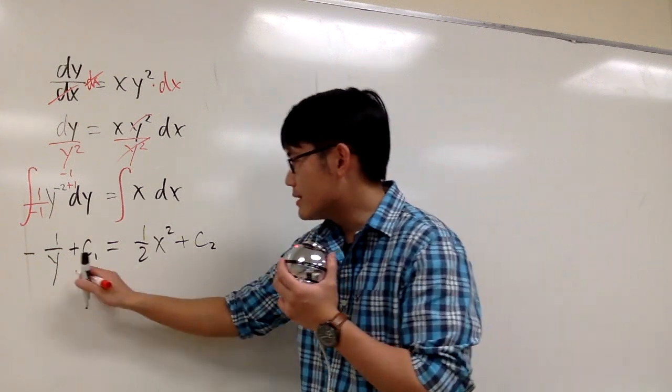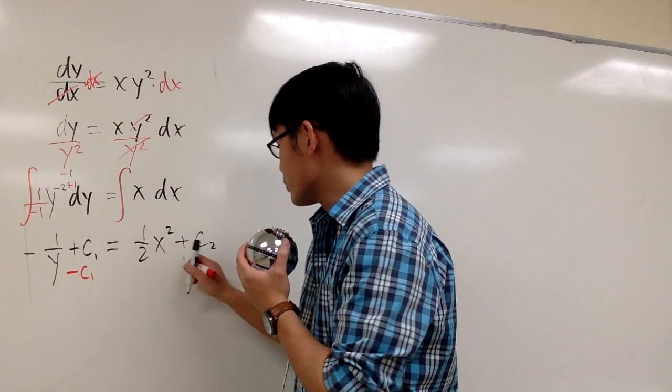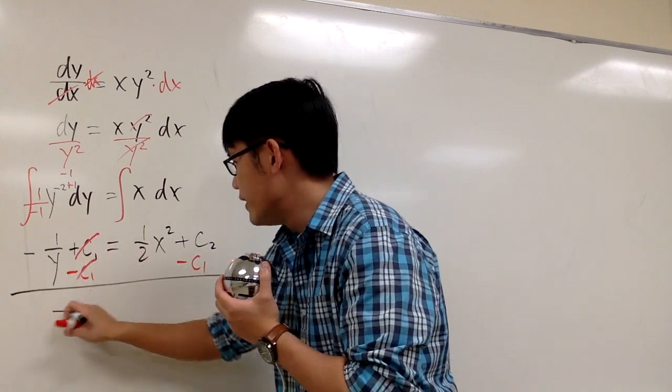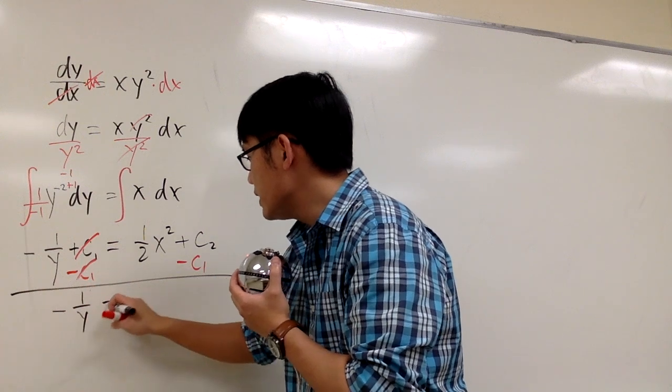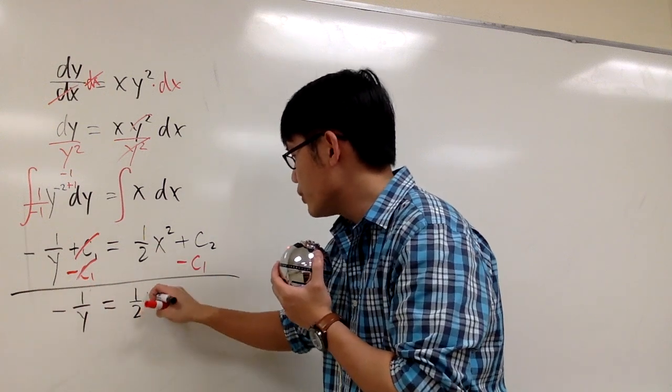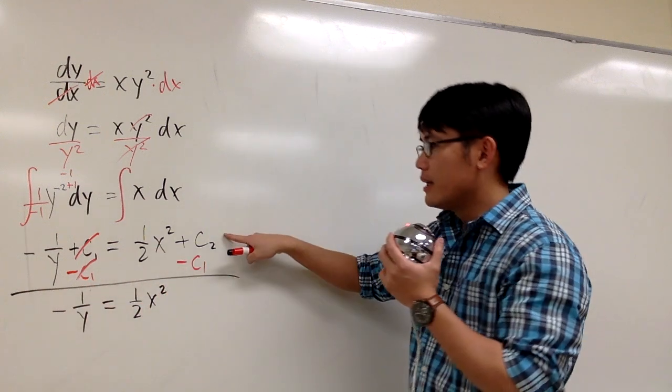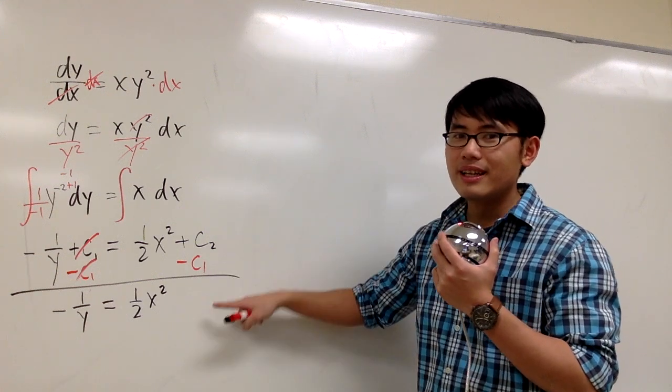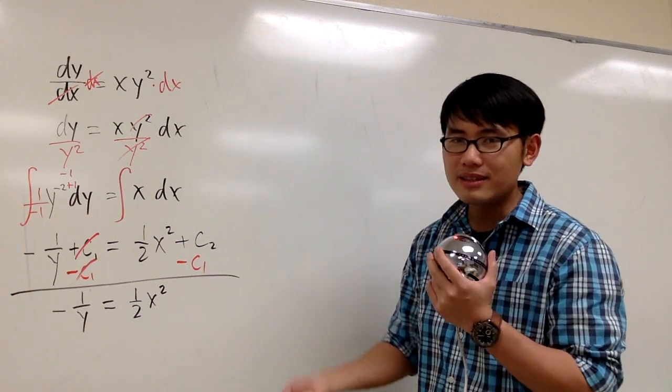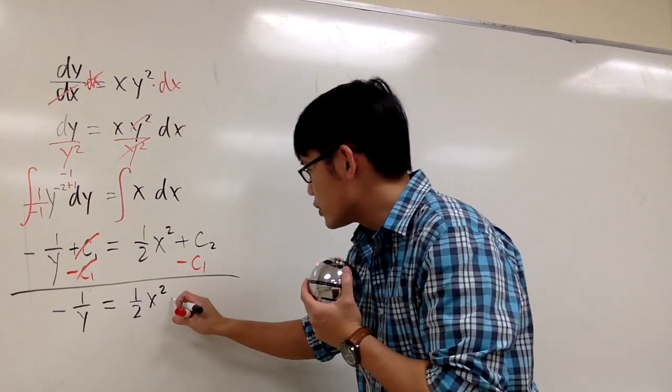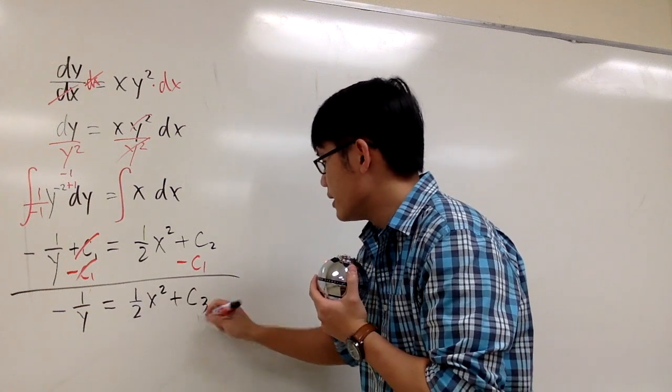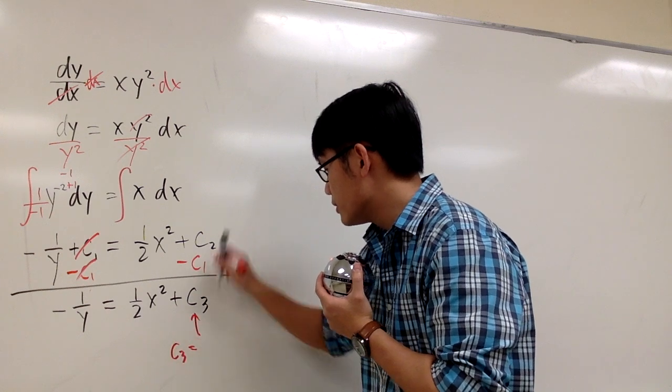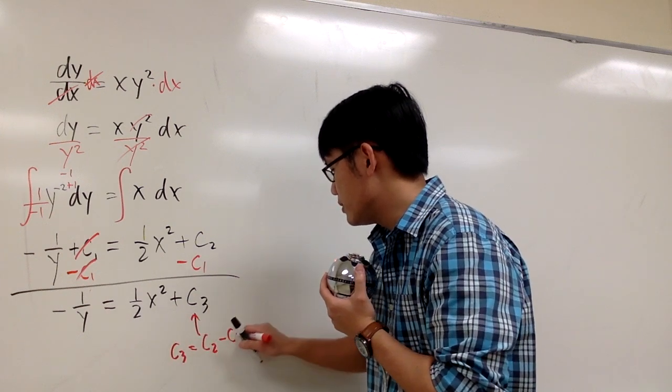But then the problem is that if you subtract c1 on both sides, they cancel, of course. And then I can get this as negative 1 over y is equal to 1 over 2x squared. But then c2 is a constant, minus c1, which is also a constant. The result is another constant. I might as well just write it as plus c3. So c3 is equal to c2 minus c1, which is just a constant.